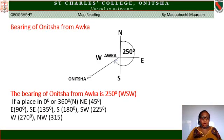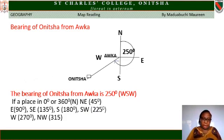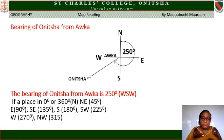Let us find the bearing of Onitsha from Oka. You put your cardinal points at Oka, which is the observer's position. Use a straight line to join Oka to Onitsha. Then from the true north, use your protractor to calculate the angle between the true north and the line joining to Onitsha. The angle there is 250 degrees. The bearing of Onitsha from Oka is 250 degrees. In terms of direction, it is West of Southwest.